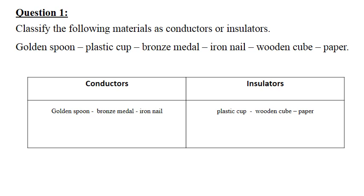How can we tell if a substance is a conductor or insulator? If it's a metal, it's a conductor; if it's not a metal, it's an insulator. Gold, silver, magnesium, aluminum, copper — all metals are conductors. So a golden spoon is a conductor.